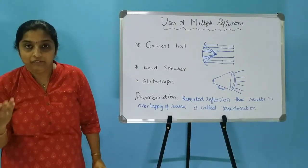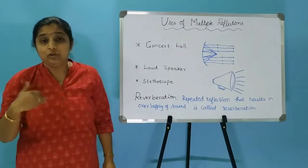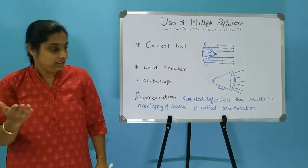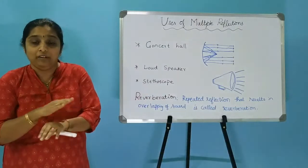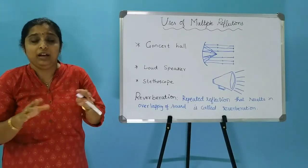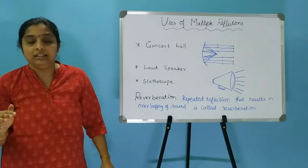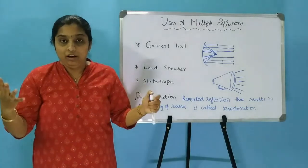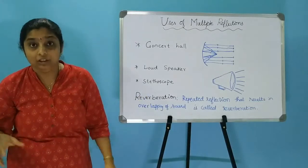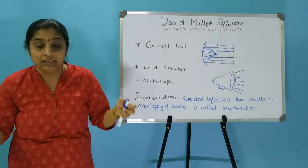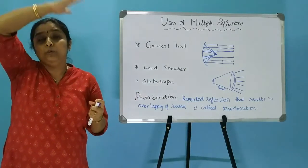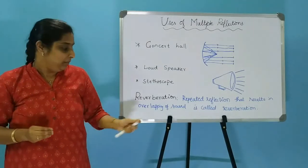Are there any negative effects of echo? Yes — this is called reverberation. If there is too much echo or too much overlapping of sound reflections, it is called reverberation. Reverberation is repeated reflection that results in overlapping of sound, making it impossible to hear anything distinctly. In big halls, reverberation is reduced by using thicker curtains with sound-absorbent materials, sound-absorbent seating materials, or sound-absorbing materials placed in the roof.